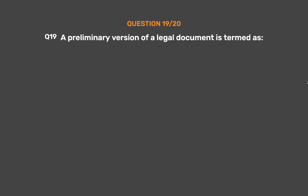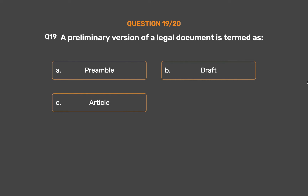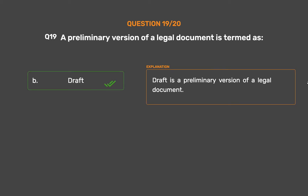Question 19: A preliminary version of a legal document is termed as. Option A: Preamble. Option B: Draft. Option C: Article. Option D: Philosophy. The correct answer is Option B: Draft. Draft is a preliminary version of a legal document.